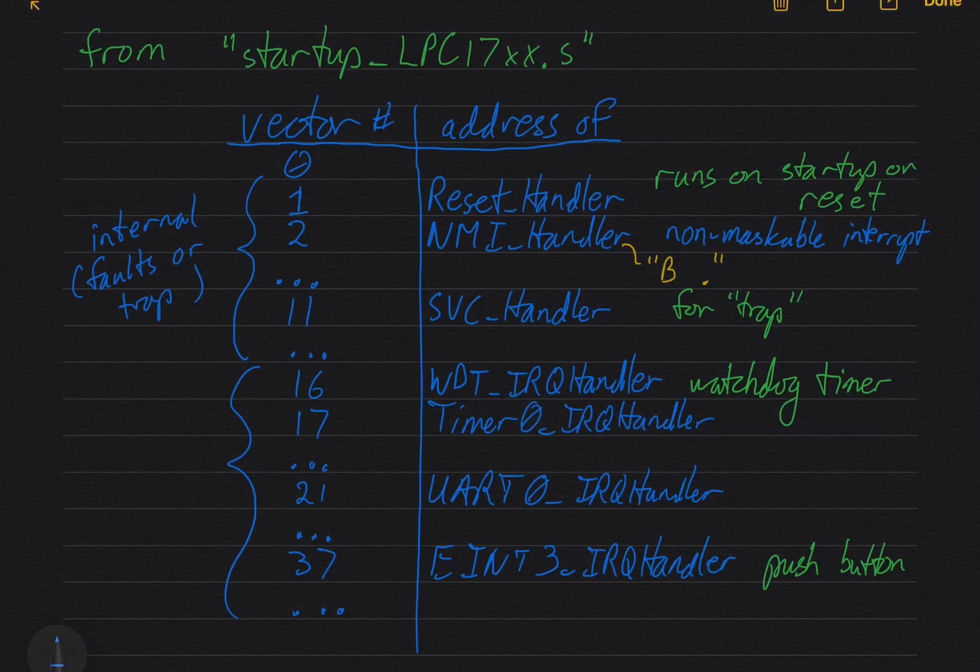So these exception sources are external to the processor, so they're basically IRQs. I believe they go up to vector 63 with the LPC 1768. The size of the vector table is configurable for Cortex M3 processors, but in 1768 I believe it's 64 entries total.